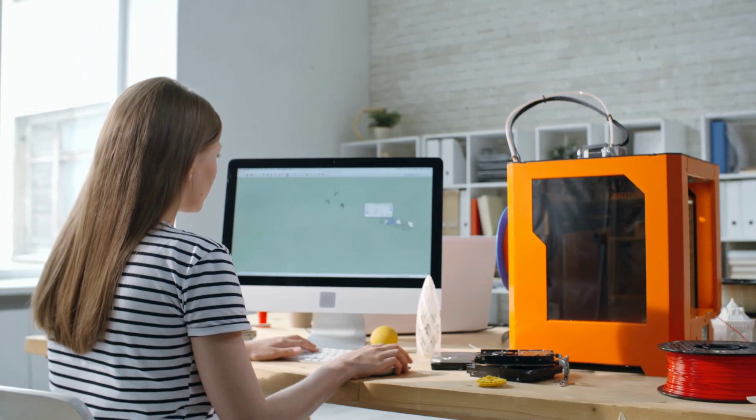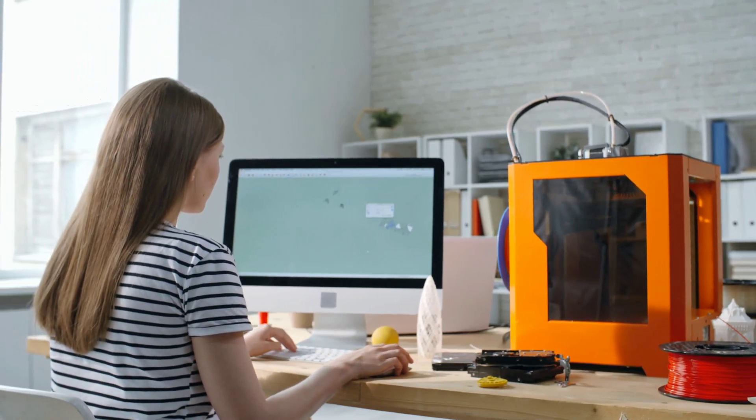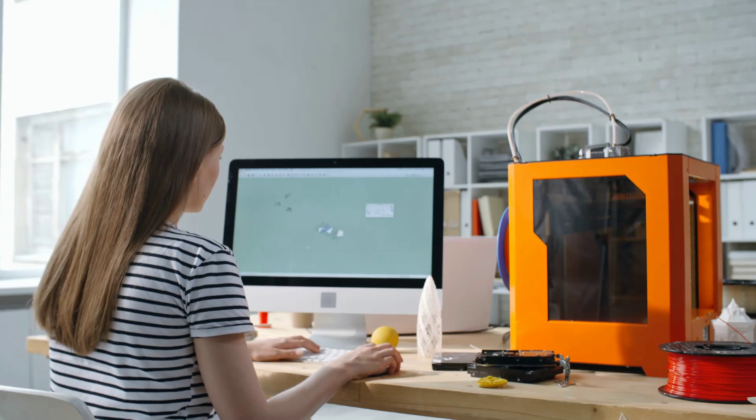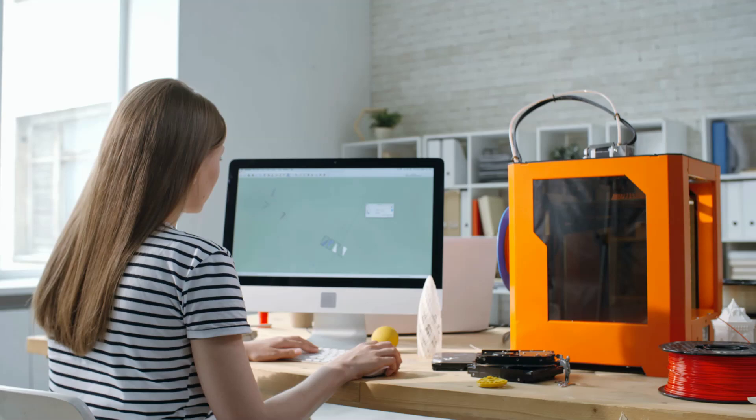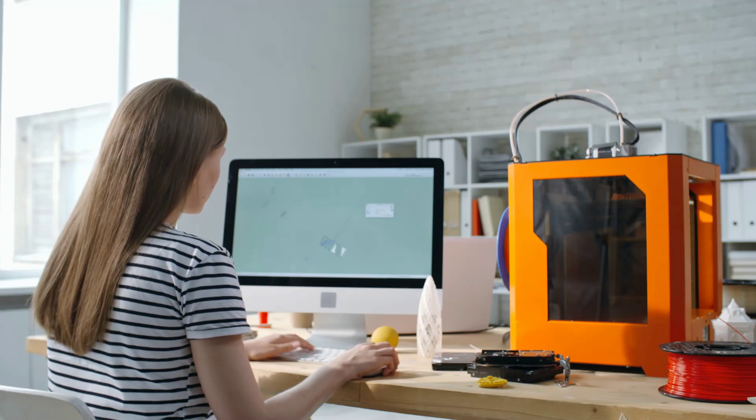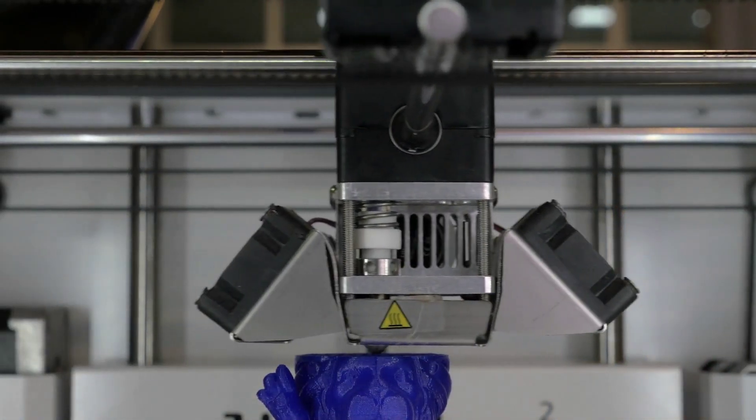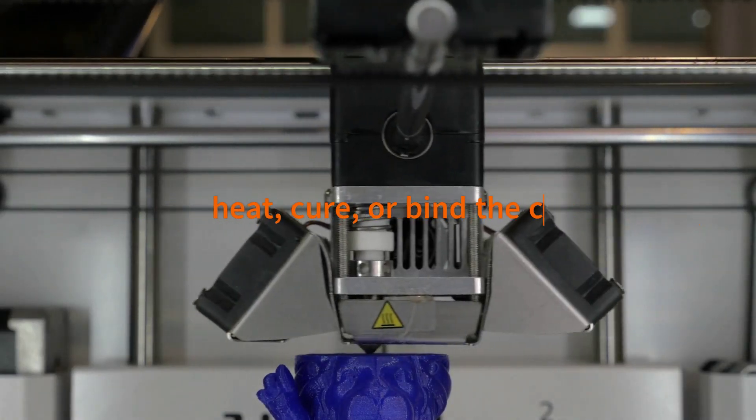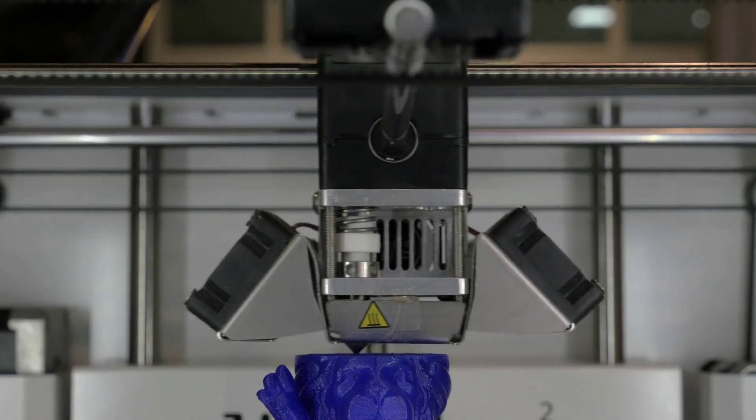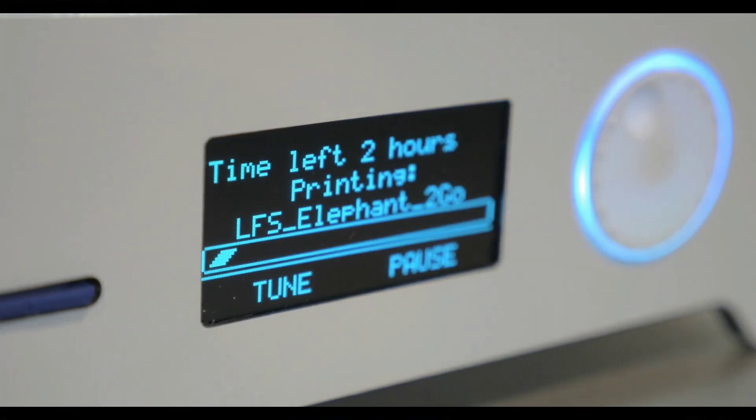Now let's delve into the heart of the action, the 3D printing process itself. Once you've sliced your 3D model into thin layers, like digital slices of bread, and fed the file to your printer, the magic begins. The printer, depending on the technology, will heat, cure, or bind the chosen material layer by layer, slowly building your object from the ground up. The process can take minutes for small objects or even days for complex designs.